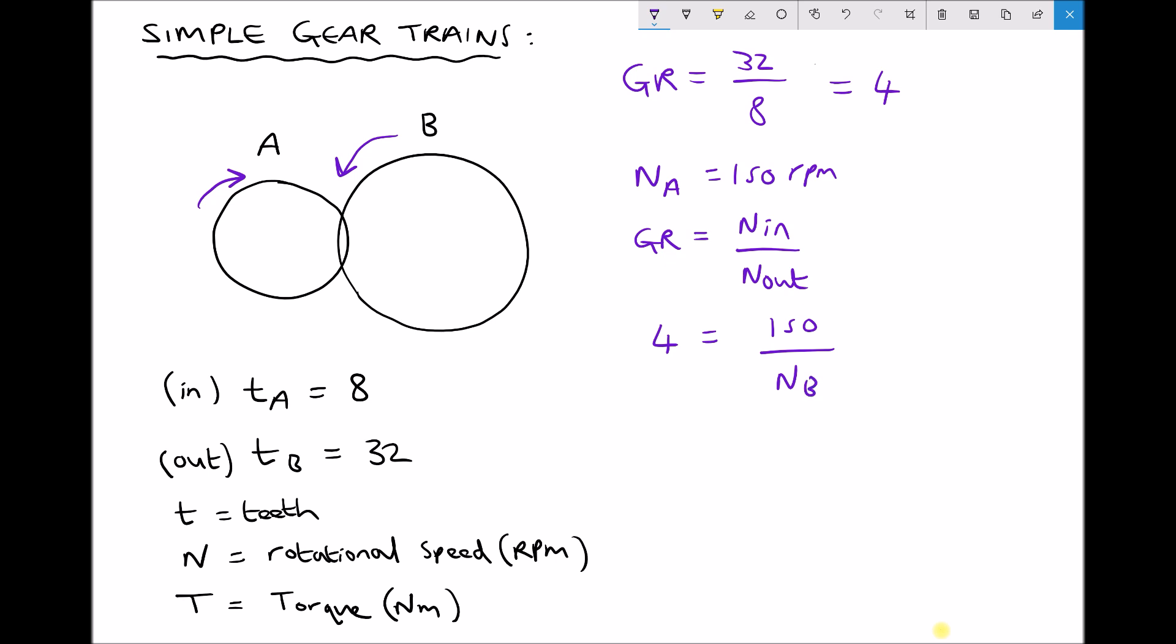Now what we have here is a simple linear equation, so we can multiply each side of the equation by NB and then divide each side of the equation by 4. So what we get in this instance is NB is 150 over 4 which equals 37.5 RPM.